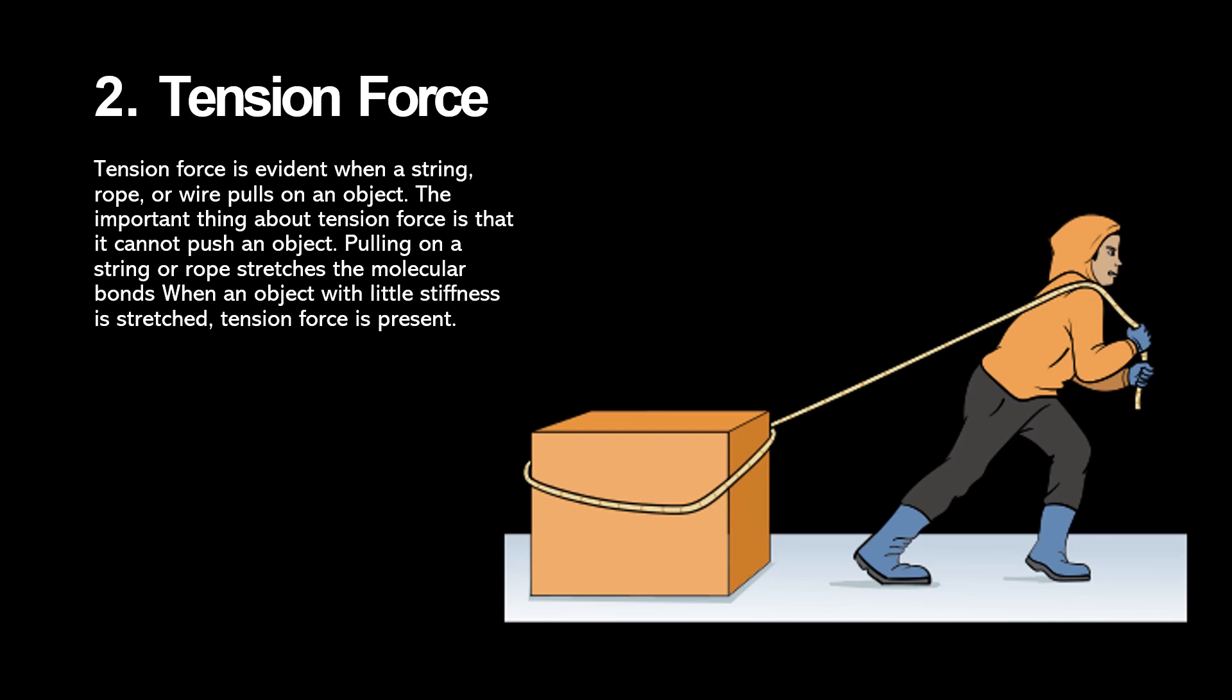Next up is tension force, which can be observed when a rope pulls on an object. What you need to know is that pulling on the string stretches the molecular bonds, creating a tension that stiffens the string and allows it to exert a force. Tension force cannot push objects because this would not tighten the molecular bonds, and the string would just sag. Tension is a contact force.